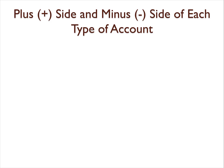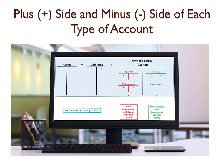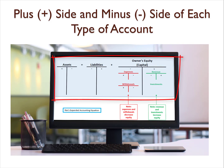To record accounting transactions, we must know which side is the increase or plus side of each T-account, and which side is the decrease or minus side of each T-account. During my homework demonstrations, I will often refer to this, which I call the accounting grid. It looks complicated at first, but once we know it, we can refer back to it to record any accounting transaction that we'll ever encounter.